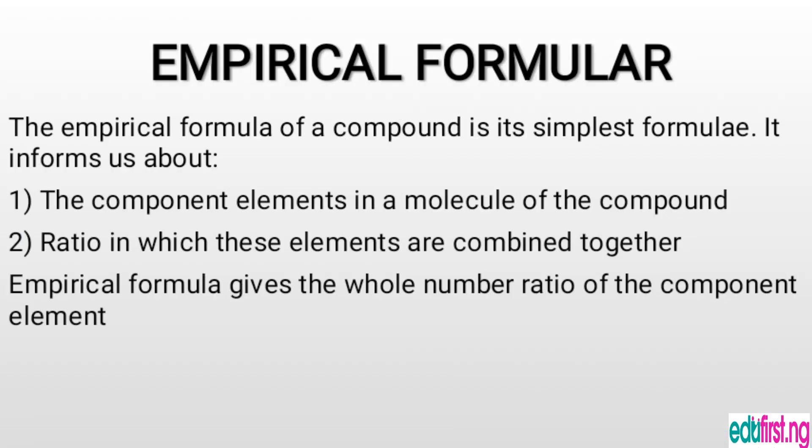Let's proceed. The empirical formula of a compound is its simplest formula. It informs us about: one, the component elements in the molecule of the compound; and two, the ratio in which these elements are combined together. Empirical formula gives the whole number ratio of the component elements.